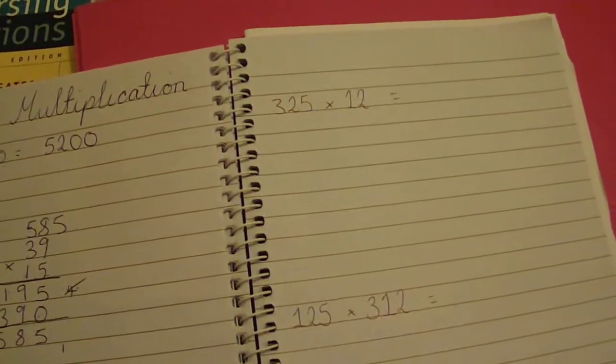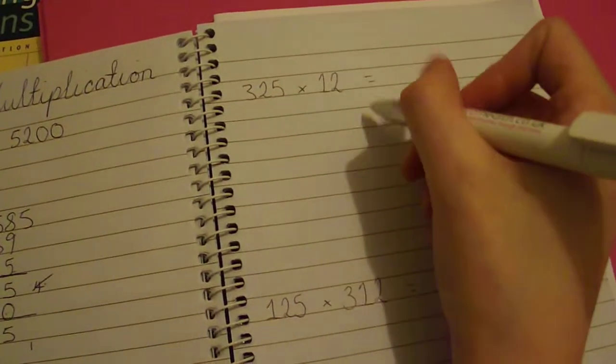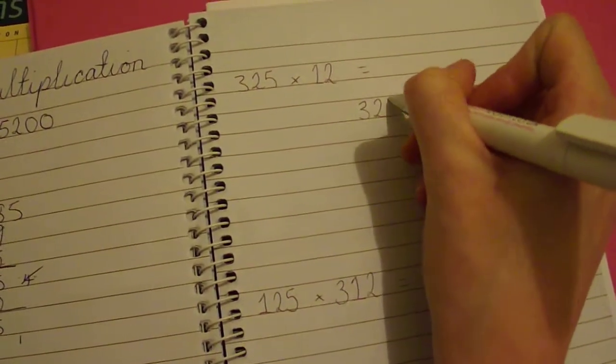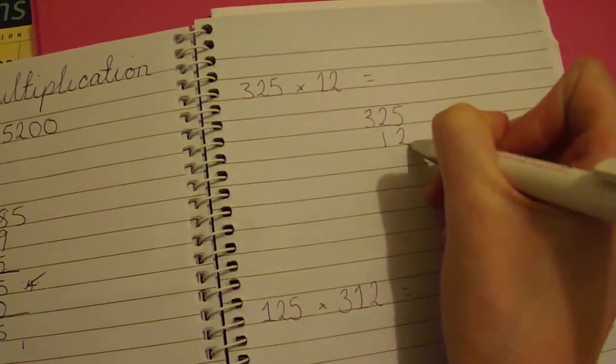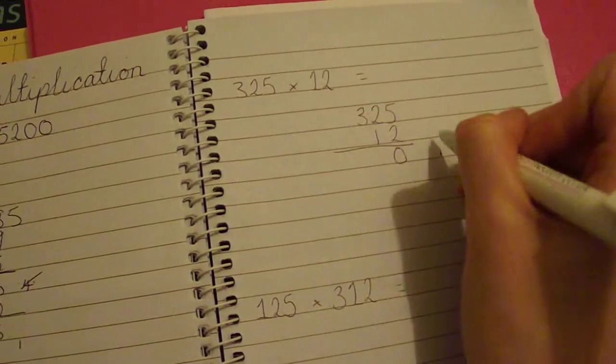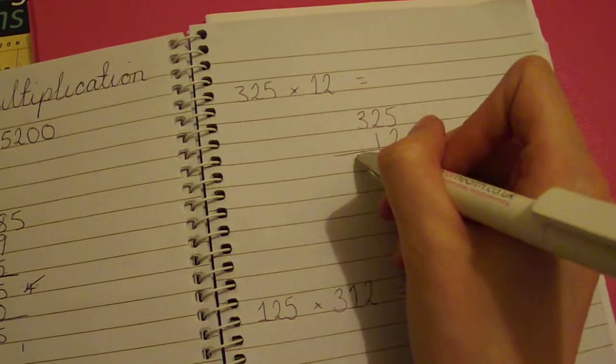So this one, 325 times 12. I'm working with slightly bigger numbers now to make it a bit harder for you guys. So 325 times 12. 2 times 5 is 10. Carry the 1, add the 0. 2 times 2 is 4. Add this 1 is 5. 2 times 3 is 6.